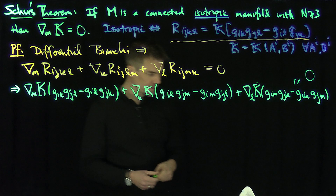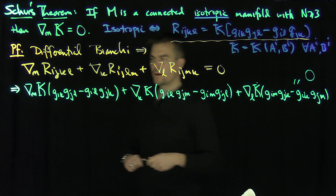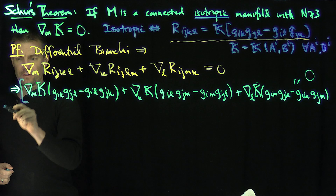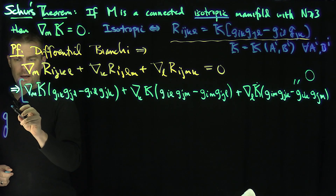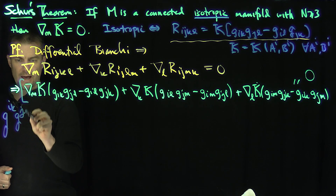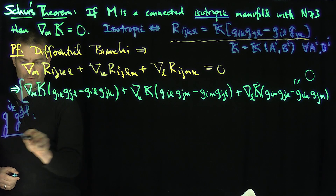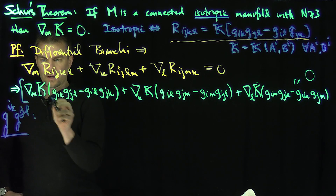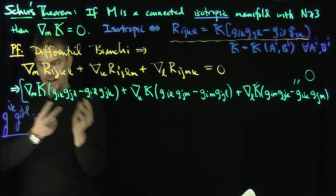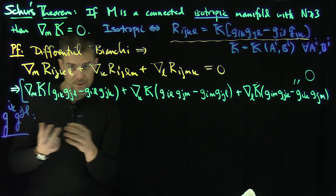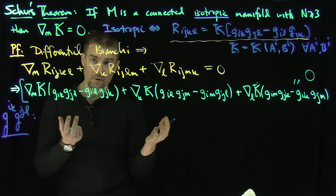Now I'm going to trace this equation — I'm going to hit everything with g^ik upper and g^jl upper. When we raise those indices, I can commute the metric tensors and inverse metric tensors inside and outside of a covariant derivative.